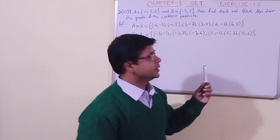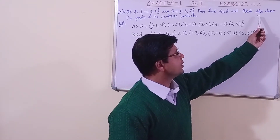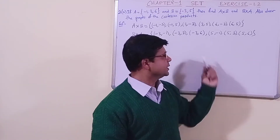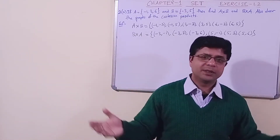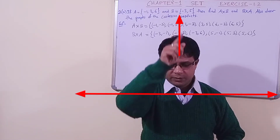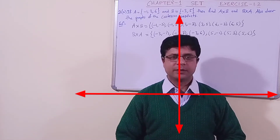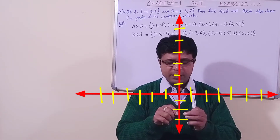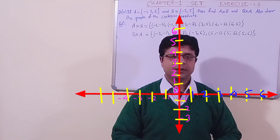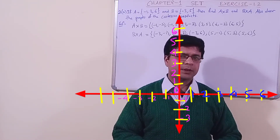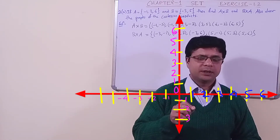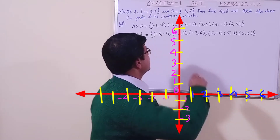Now we have to complete the second part: draw the graph of the Cartesian product. In the remaining space, let us draw it. First let us draw the x-axis, then the y-axis. On the x-axis and y-axis, let us mark the points 1, 2, 3, -1, -2, -3. Now let us plot each point of both the Cartesian products, A cross B and B cross A.